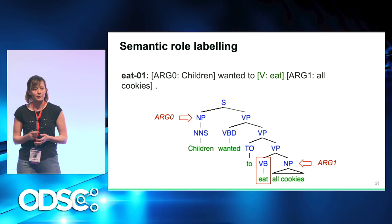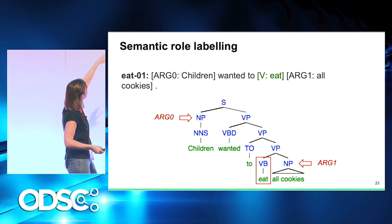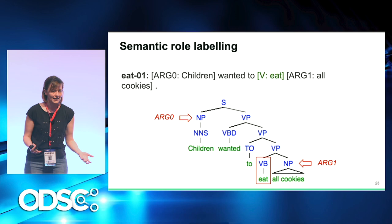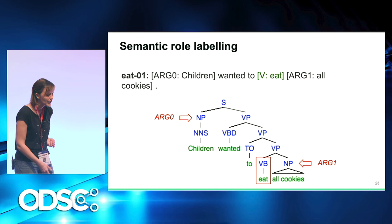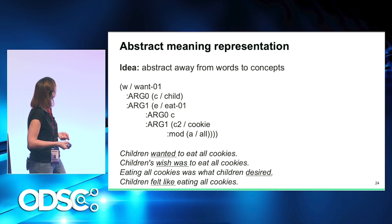Semantic role labeling has a couple of drawbacks because we are working at the level of chunks of text. For example, 'all cookies' will be two words performing a certain role, but then you cannot match them to another mention of 'cookie' later in the text. The idea of abstract meaning representation is to move away from words and work only at the concept level — we should work on the meaning, on the concept level.